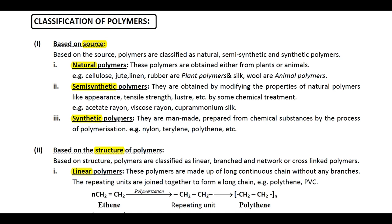Synthetic polymers are completely man-made — 100% artificial. They are prepared from chemical substances by the process of polymerization. Examples include nylon, terylene, polythene, and so on.